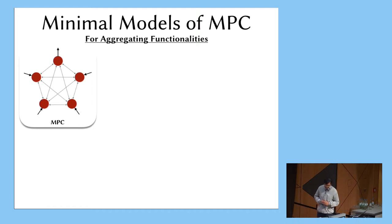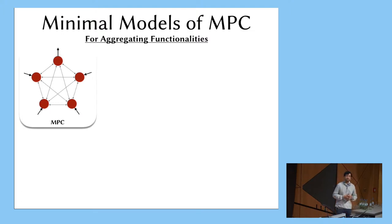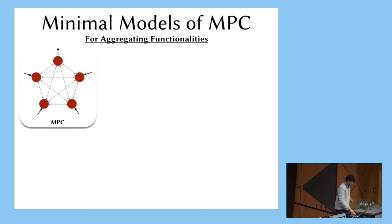To understand the feasibility question for MPC, in this work we also introduced some minimal or simple models of MPC for aggregating functionalities. What do we mean by aggregating functionalities? There's just one party who has output — the aggregator — and all the other parties have inputs. They don't have any outputs.